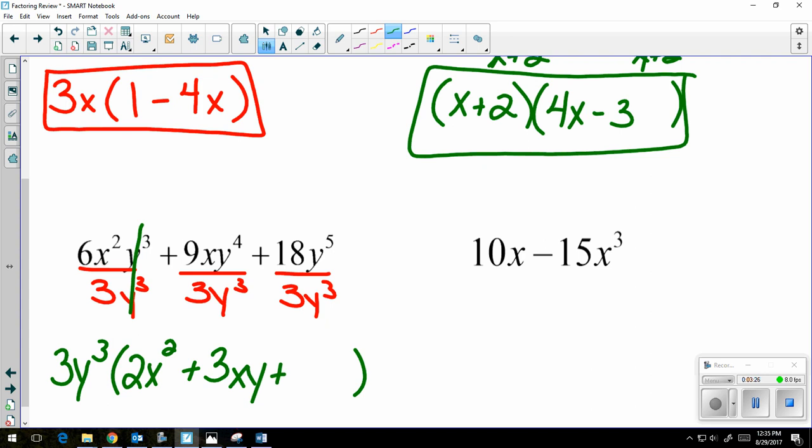y to the 4th divided by y cubed is y. Bring down my plus sign. 18 divided by 3 gives me 6. y to the 5th divided by y cubed is y squared. There is my factored form.